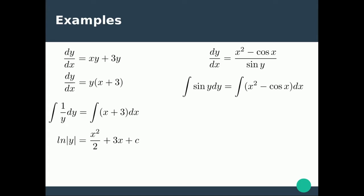If we integrate sin y we get minus cos y. x² is x³ over 3. Cos x is sin x and it's already minus, and there's our constant of integration.